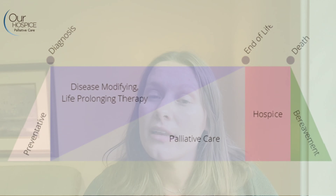Palliative care starts to ramp up as the disease progresses — meaning symptom management, anxiety, depression, family support, social needs, chaplaincy, spiritual support. Over time, the palliative care piece ramps up as the disease progresses.